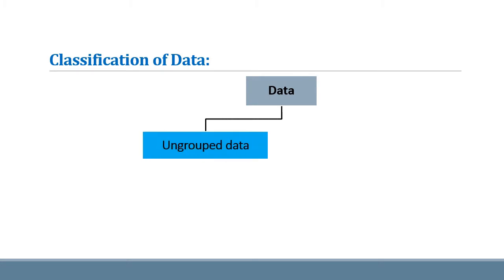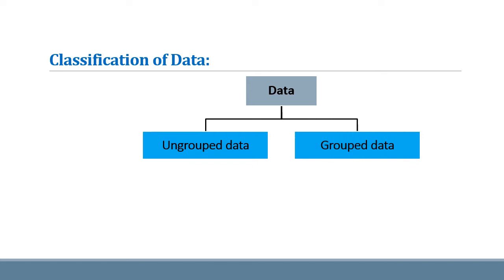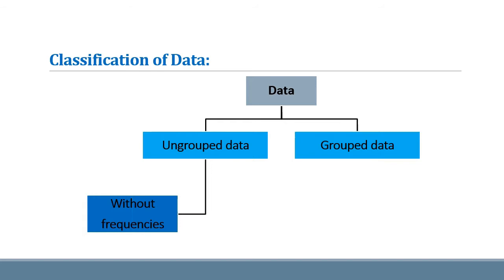Now we see the classification of data. The data can be classified as ungrouped type data and grouped type data. Ungrouped type data is also known as raw data, and grouped data means observations interval-wise. Ungrouped type data can also be classified as data without frequencies and data with given frequencies.